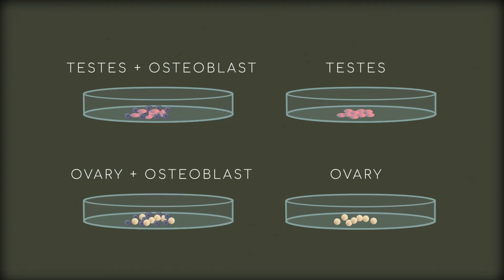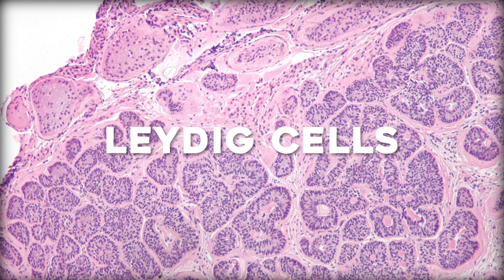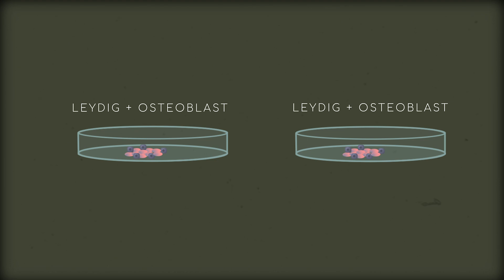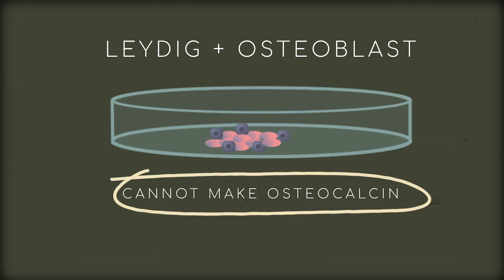There's also evidence that osteocalcin impacts fertility, but only for animals with testes. Scientists noticed that mice who didn't make lots of osteocalcin had smaller litter sizes. In follow-up experiments, researchers put ovary and testes tissue in dishes with osteoblasts or without. The testes with osteoblasts increased testosterone production while the ovary tissue didn't increase estradiol or progesterone production. To confirm the difference was due to osteocalcin, scientists put Leydig cells — the cells that actually make testosterone — with osteoblasts modified to either produce osteocalcin or not. Those that didn't make osteocalcin did not lead to increased testosterone. Supplementing Leydig cells with straight-up osteocalcin increased testosterone production in a dose-dependent manner: more osteocalcin, more testosterone. But again, this was in mice, and a lot of this initial research was done by one lab and hasn't been replicated.